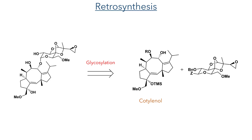So let's look at the retrosynthesis. The first disconnection happens at the glycosidic bond and this produces two fragments: cotylenol and the glycoside donor.